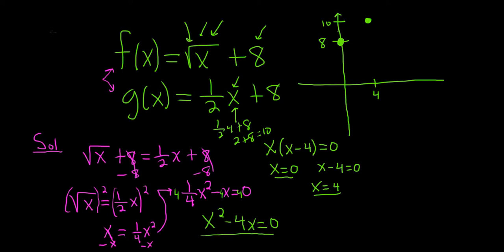This is a square root function. So recall, the square root function looks something like this. This is the square root of x. So the square root of x plus eight is basically shifted up by eight, so it looks like that. So this purple one will be f of x. And this one is a line, so this one should look like this. This will be g of x.